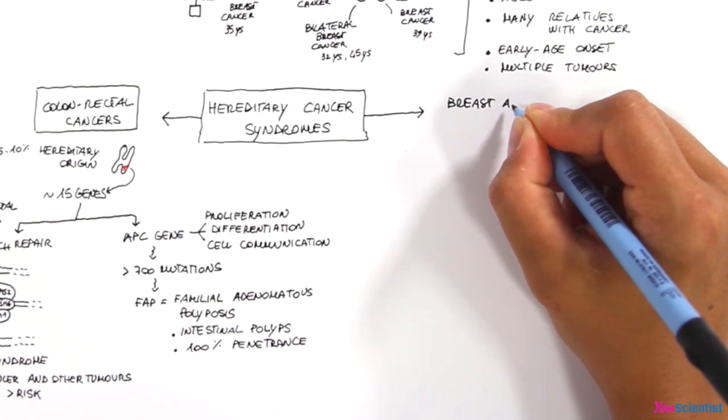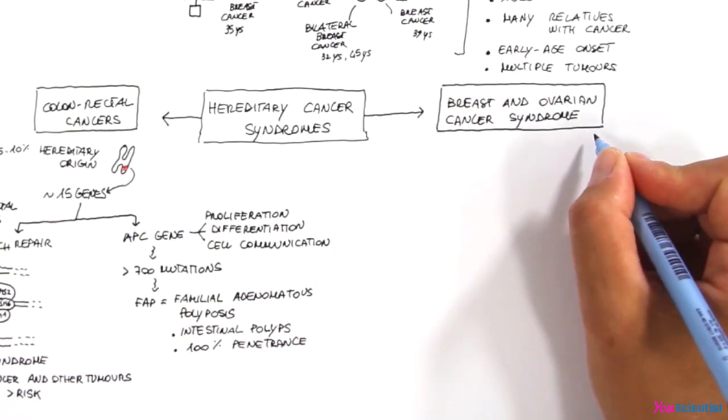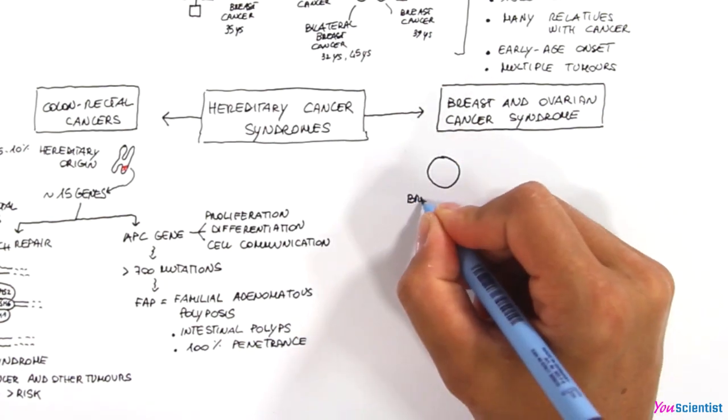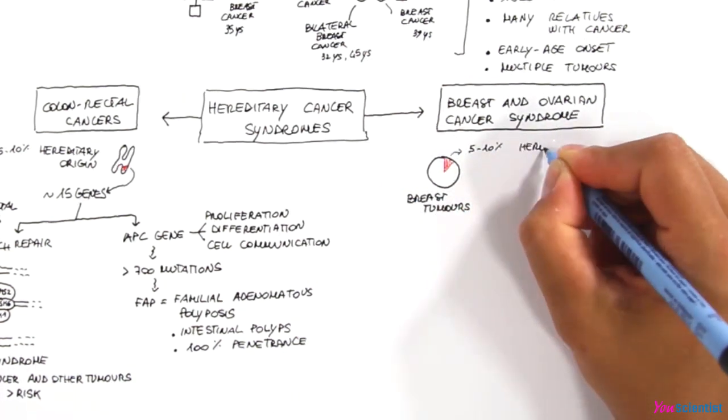Another example of hereditary cancer syndromes is the breast and ovarian cancer syndrome. Among all breast tumors, those with a hereditary basis represent 5 to 10% of the cases.